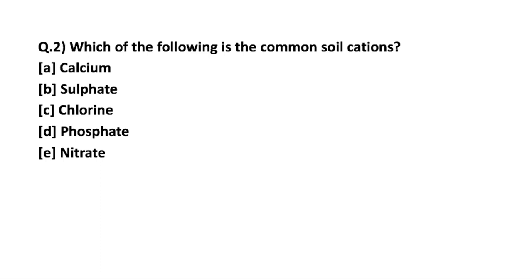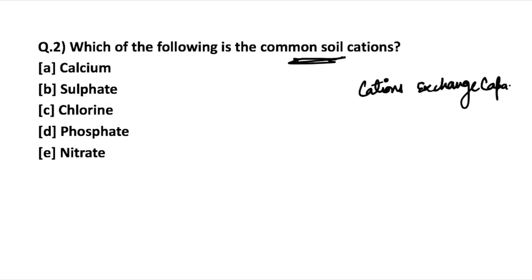Next question: which of the following is a common soil cation? This is very important — a question was asked on this last year. First, we need to understand cation exchange capacity of soil: how many positively charged ions (cations) can be retained by the soil. The cation exchange capacity affects pH level, soil fertility, and water retaining capacity, which ultimately affects crops.